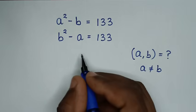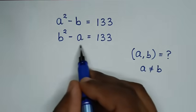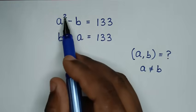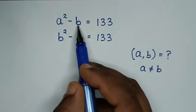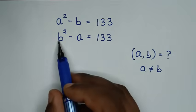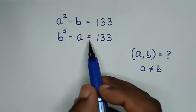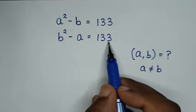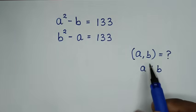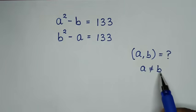Welcome. We are going to solve this math problem: a squared minus b is equal to 133, and b squared minus a is equal to 133. We need to find the values of a and b, given that a is not equal to b.